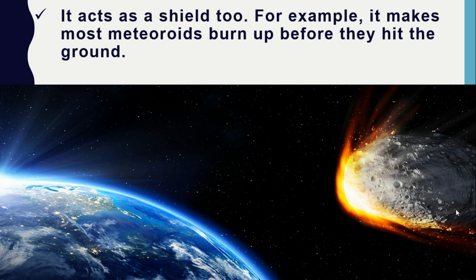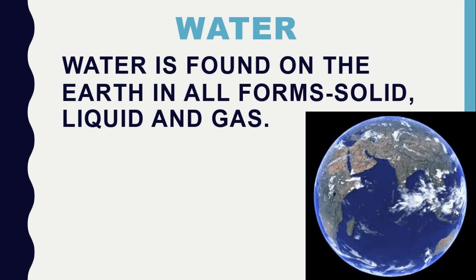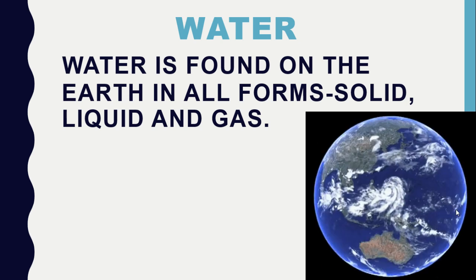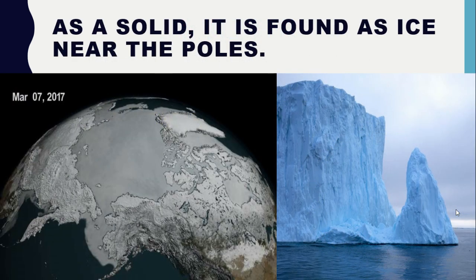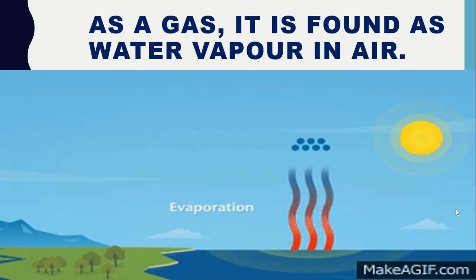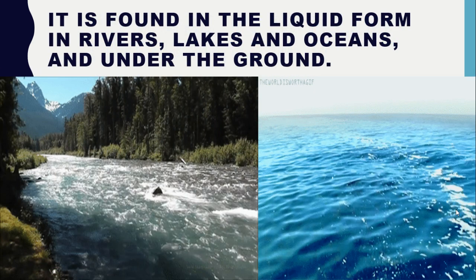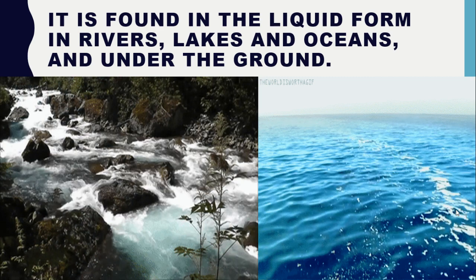Water is found on the Earth in all forms — solid, liquid, and gas. As a solid, it is found as ice near the poles — the North Pole and the South Pole. As a gas, it is found as water vapor in air. It is found in liquid form in rivers, lakes, and oceans, and under the ground.